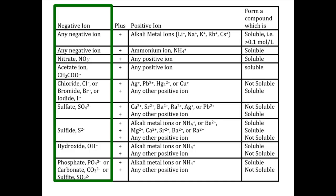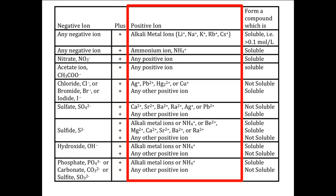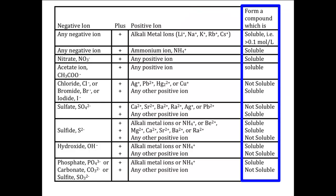There are four columns. The first one is labeled negative ion and lists negative ions that are important in solubility problems. The second column is labeled plus and shows a bunch of pluses, which we will discuss later. The third column is labeled positive ion and lists positive ions that have important solubility relationships. The fourth column is labeled form a compound which is, and lists either soluble or not soluble. Also note that in the first row, it gives a definition of what this table means by soluble.